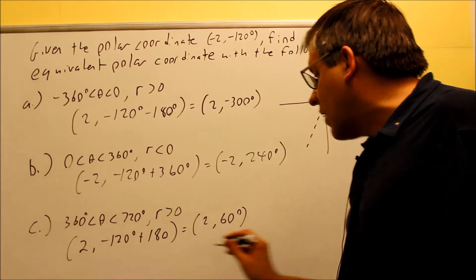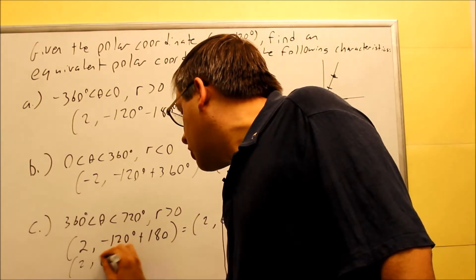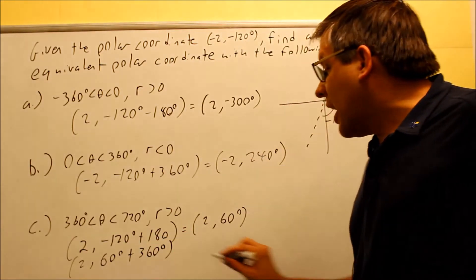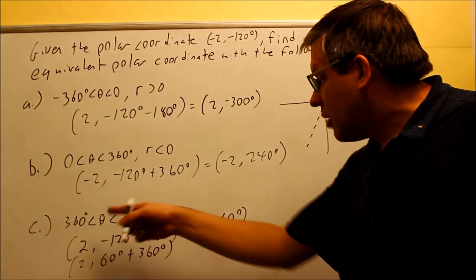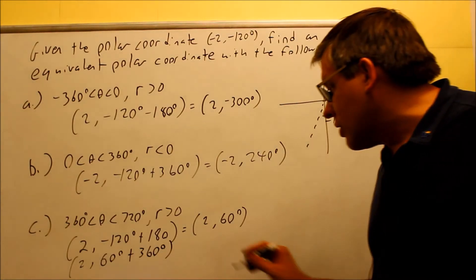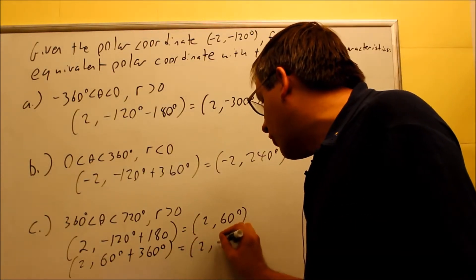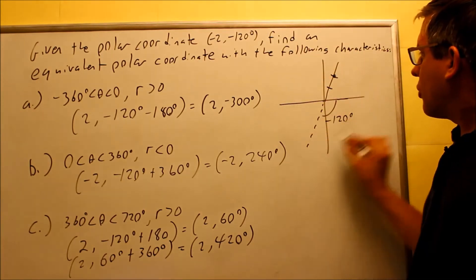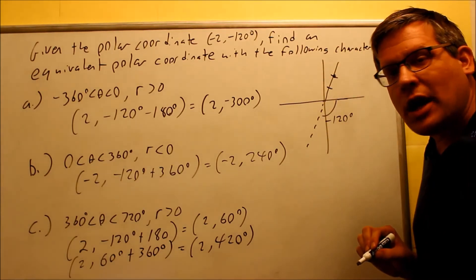So what I need to do is I have to take now 2, and I'm going to do 60 degrees plus 360. I'm adding that because I want the angle to end up between 360 and 720. So if I do that, then I get 2, and I get 420, which basically means that I would go 60 here and add another 360. It would still take me to the same spot.